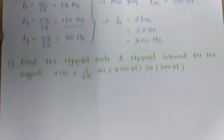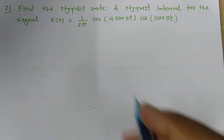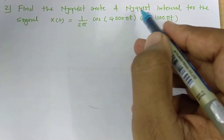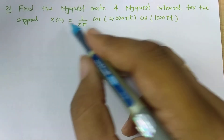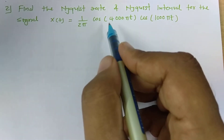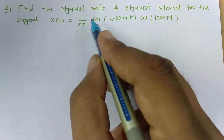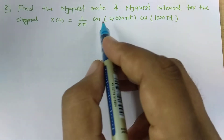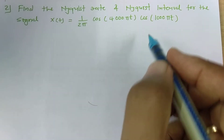Now let us solve a few more problems. The next question asks to find the Nyquist rate and Nyquist interval for a given signal. Here the signal is not given directly in terms of its frequency components, so we need to express it in that form.